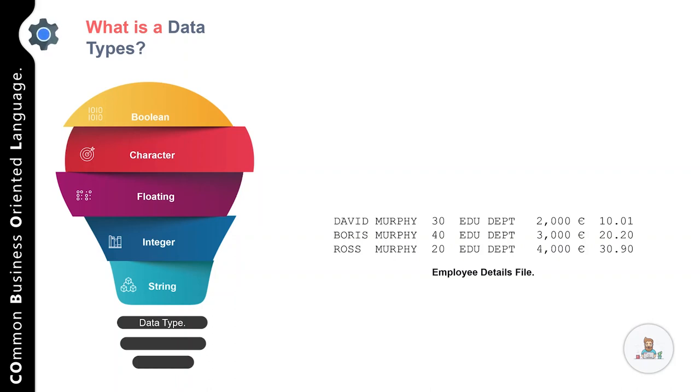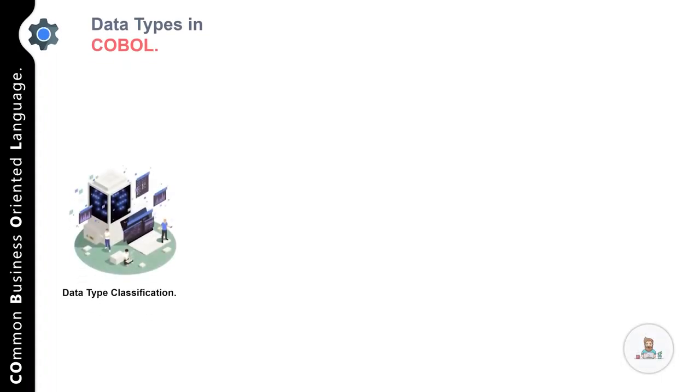After that you have employee monthly tax, which is a floating value, that is something with a fraction part, for example, 10.01. So finally, the majority part of understanding how to design and code programs is centered in understanding the type of data that we want to manipulate and how to manipulate that data in our COBOL program.